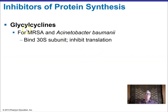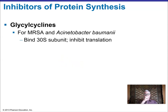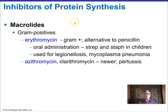Glycylcyclines are another antibiotic class discovered to combat growing antibiotic resistance — useful for methicillin-resistant Staphylococcus aureus and Acinetobacter baumannii. They are protein synthesis inhibitors. Macrolides — erythromycin and especially azithromycin, a later-generation macrolide — are also very important protein synthesis inhibitors as we continue to battle changing bacterial antibiotic resistance.